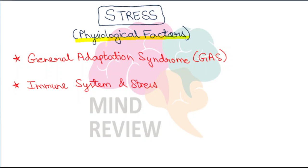Stress has a lot of factors — it has physiological factors, psychological factors, social and cultural factors also. We will be covering all of these factors one by one. For today's video, the aim is to cover the GAS model and your immune system. So let's get started. GAS model kya hai — this is known as General Adaptation Syndrome.